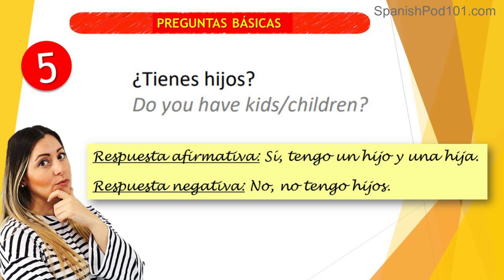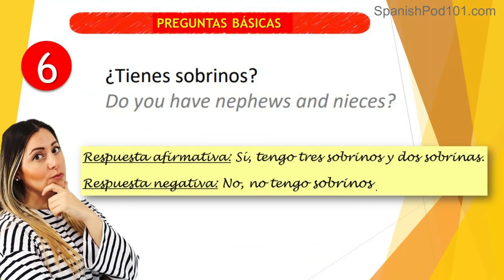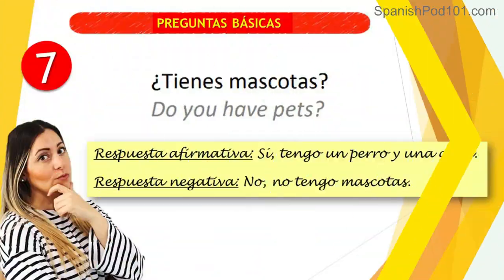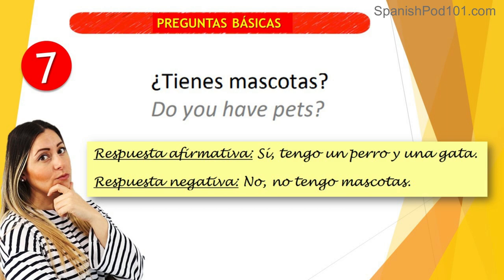Question number five: '¿Tienes hijos?' — Do you have children? 'Sí, tengo un hijo y una hija.' 'No, no tengo hijos.' Question number six: '¿Tienes sobrinos?' — Do you have nephews or nieces? 'Sí, tengo tres sobrinos y dos sobrinas.' Remember: 'sobrinos' are nephews and 'sobrinas' are nieces.